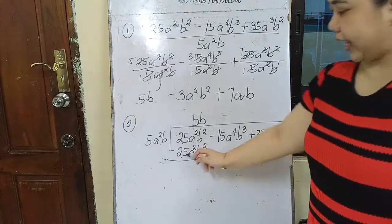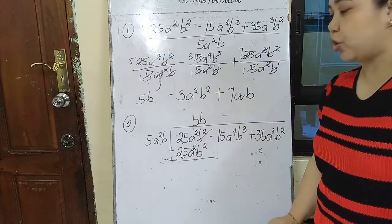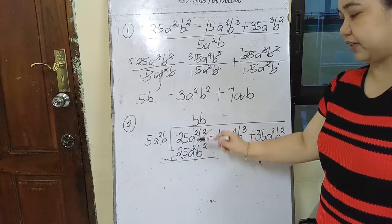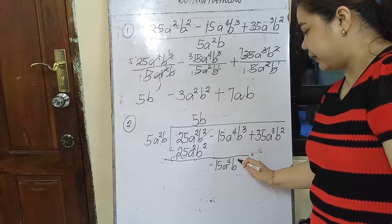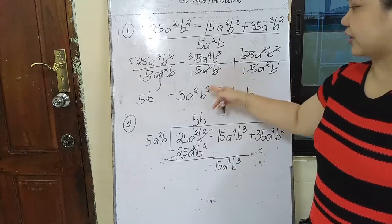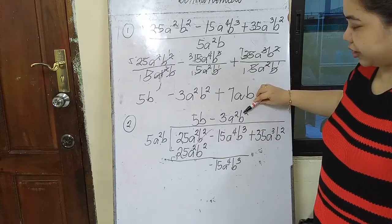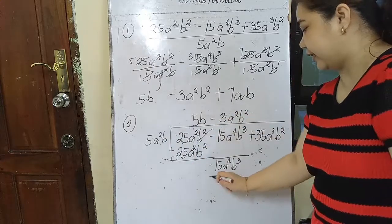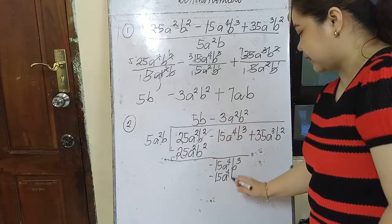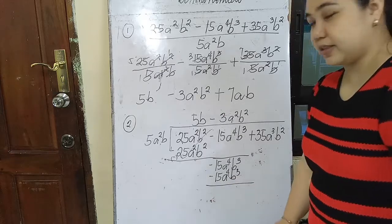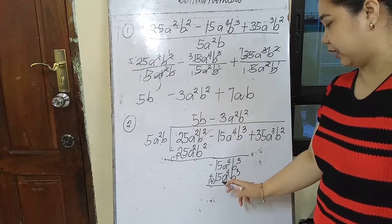Subtract — cancel. Change the sign of the subtrahend to negative, and change the operation to addition. Positive plus negative is 0. Bring down the next term: 15a⁴b³. Dividing gives minus 3a²b². If we multiply, negative 3 times 5 is negative 15. Then a² times a² is a⁴, and b² times b is b³. Change the sign of the subtrahend and proceed to addition. Negative 15 plus positive 15 is 0.